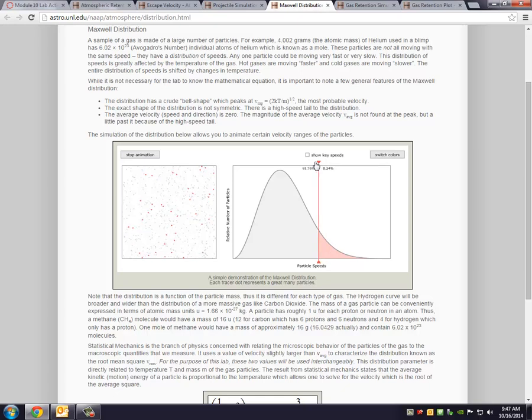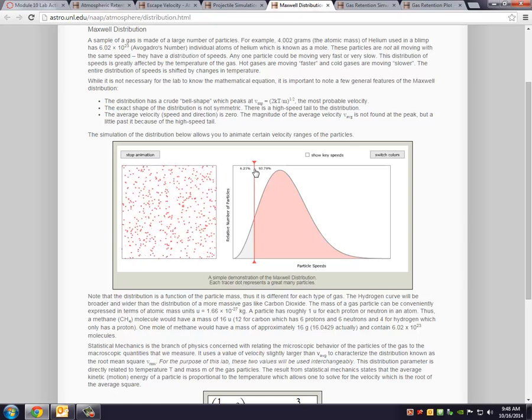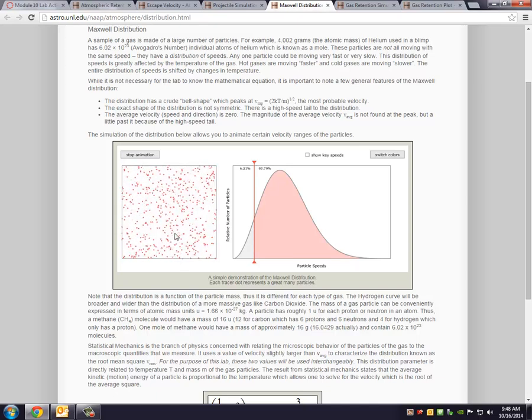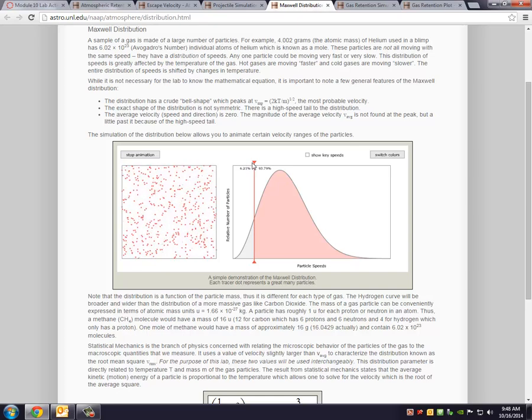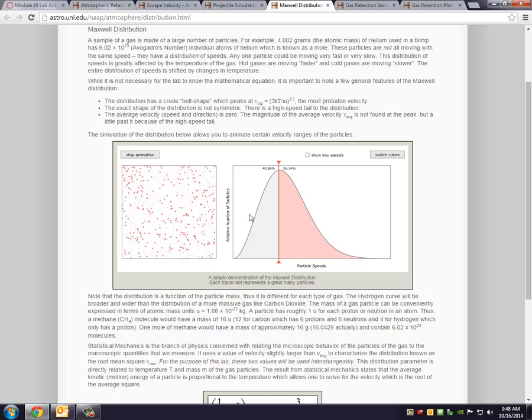And so this little slider allows you to show, when I go down here to the slower speeds, well, in this case, most of my particles are moving at or faster than that particular speed. Here, when I'm kind of in the middle, that shows that half the molecules are moving faster than that speed, and half the molecules are moving slower than that speed. So that's your average.